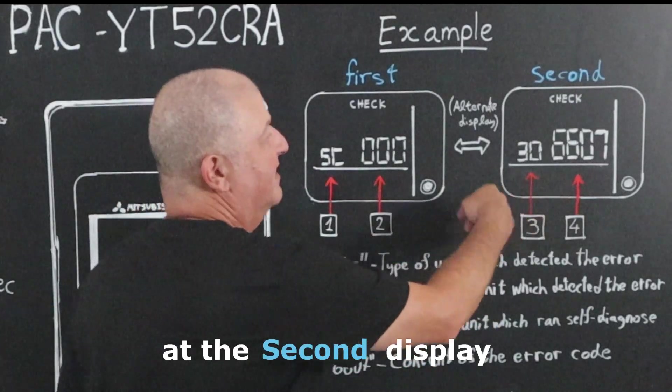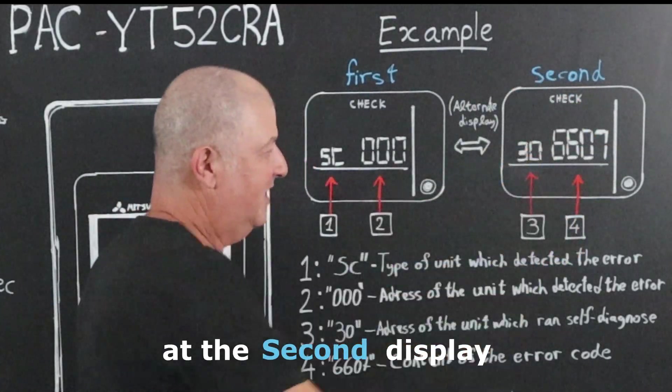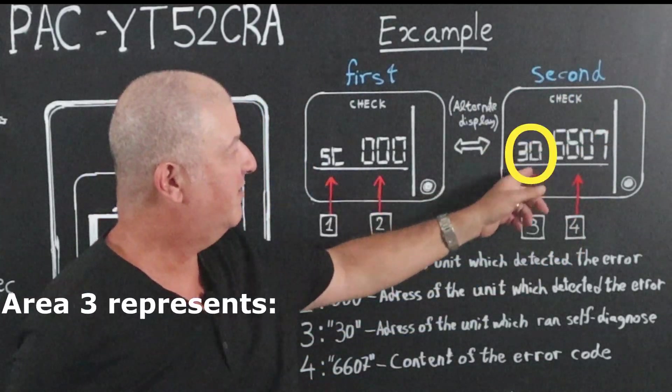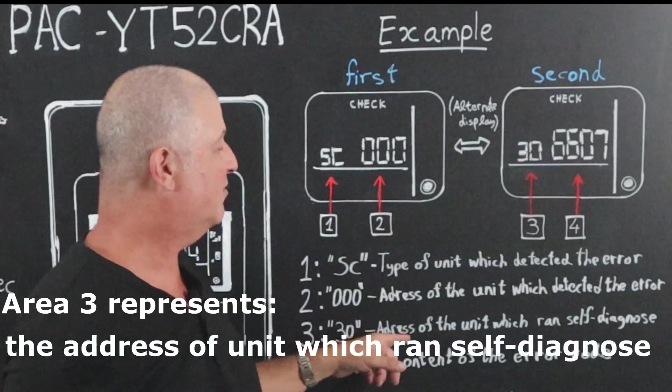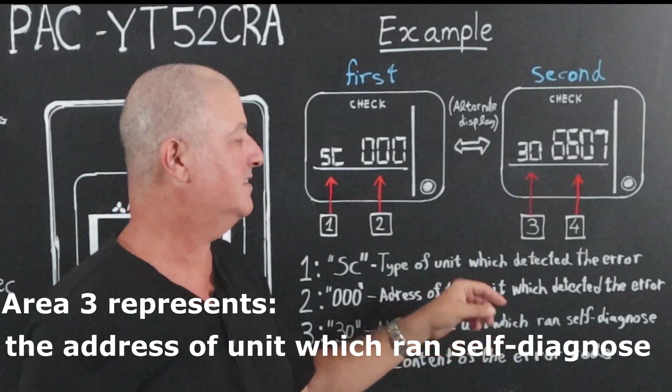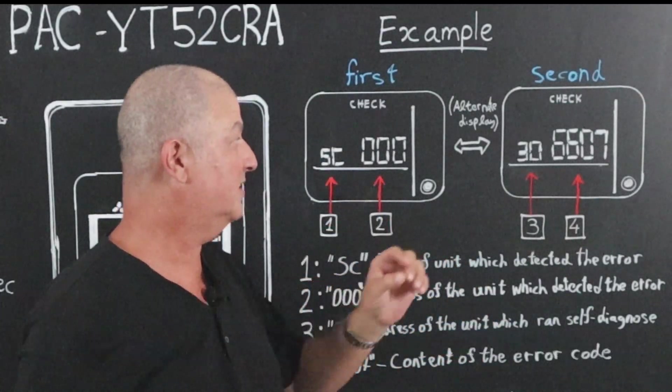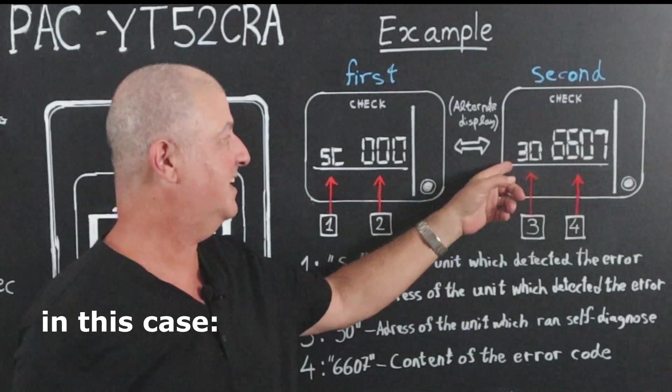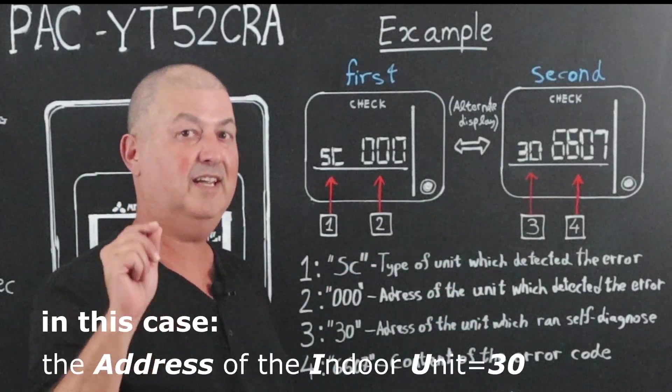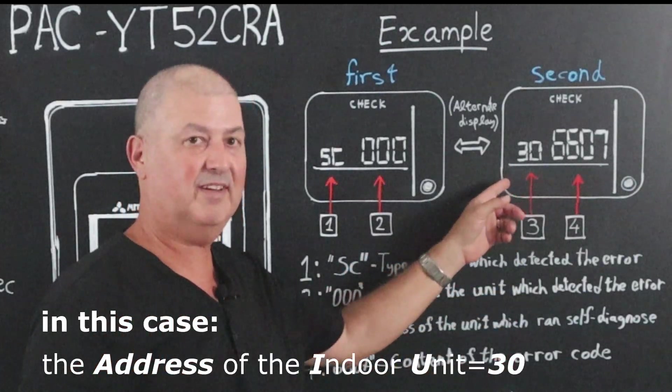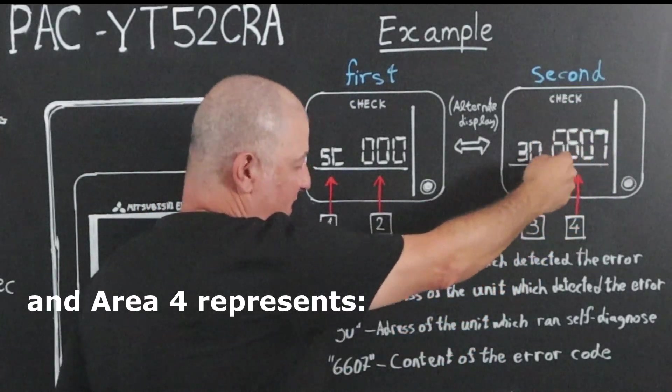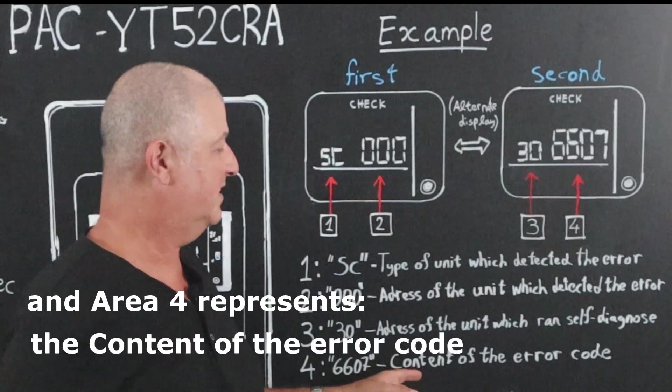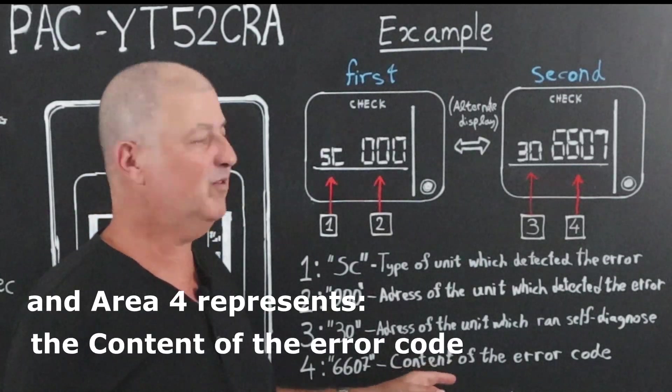At the second display, at area 3 over here, it represents the address of the unit which ran self-diagnosis. In this specific case, the address of the unit is 30, and in this area over here it represents the content of the error code.